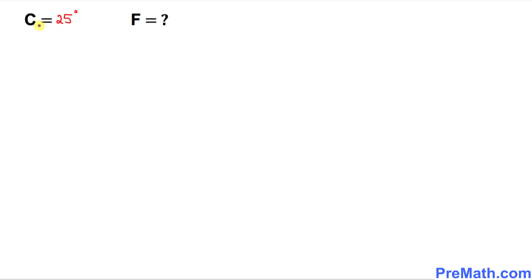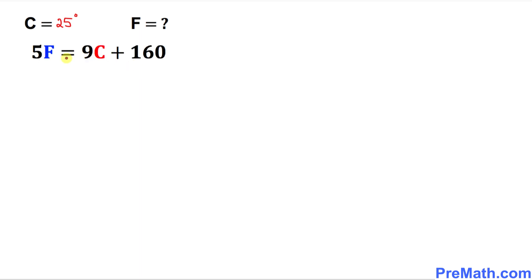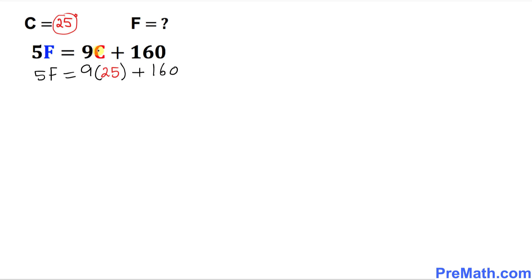Here is the very first example. In this case C equals 25 degrees and we want to find F, the Fahrenheit, so F is unknown. Using the formula, wherever you see C just replace it by 25. So we write: 5F equals 9 times 25 plus 160.